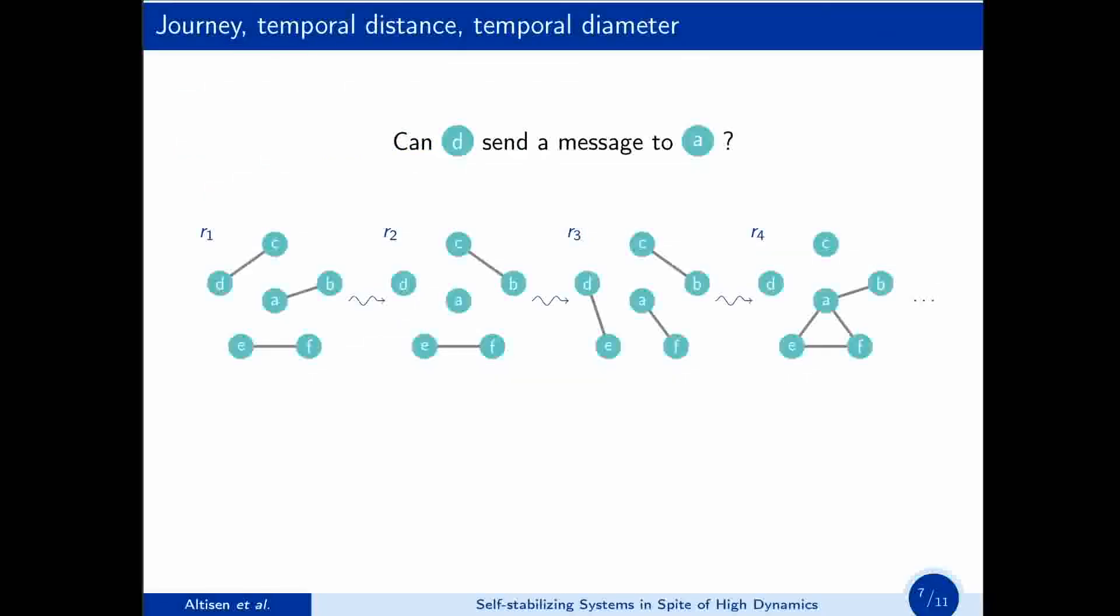Those labels say at which rounds an edge exists. With the time-varying graphs, we have an extension of the definitions of graph theory. For example, a journey, or temporal path, is a kind of path along time. Let's see an example.